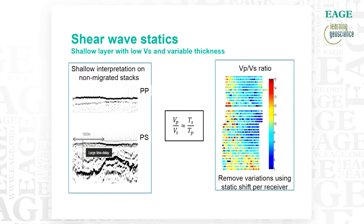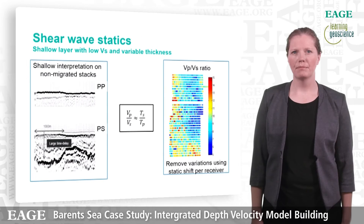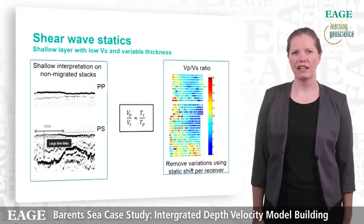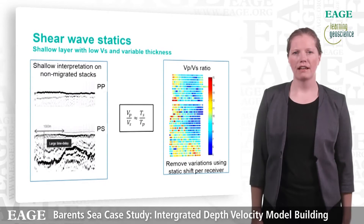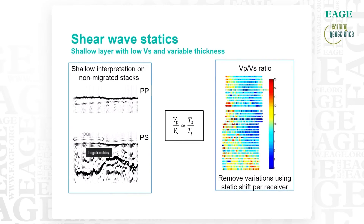On the left hand side we see PP and PS non-migrated near offset receiver stacks. On the PP data we see the water bottom followed by a thin and variable shallow layer with thickness between 20 and 50 meters. Moving to the PS data, we observe a large time delay before the corresponding event appears. The corresponding events were mapped on PP and PS and the VP/VS ratio was extracted by isolating the travel times. On the right hand side we see the lateral variation in the VP/VS ratio. The VP/VS ratio is high and varies both in a regional sense and between adjacent receivers.